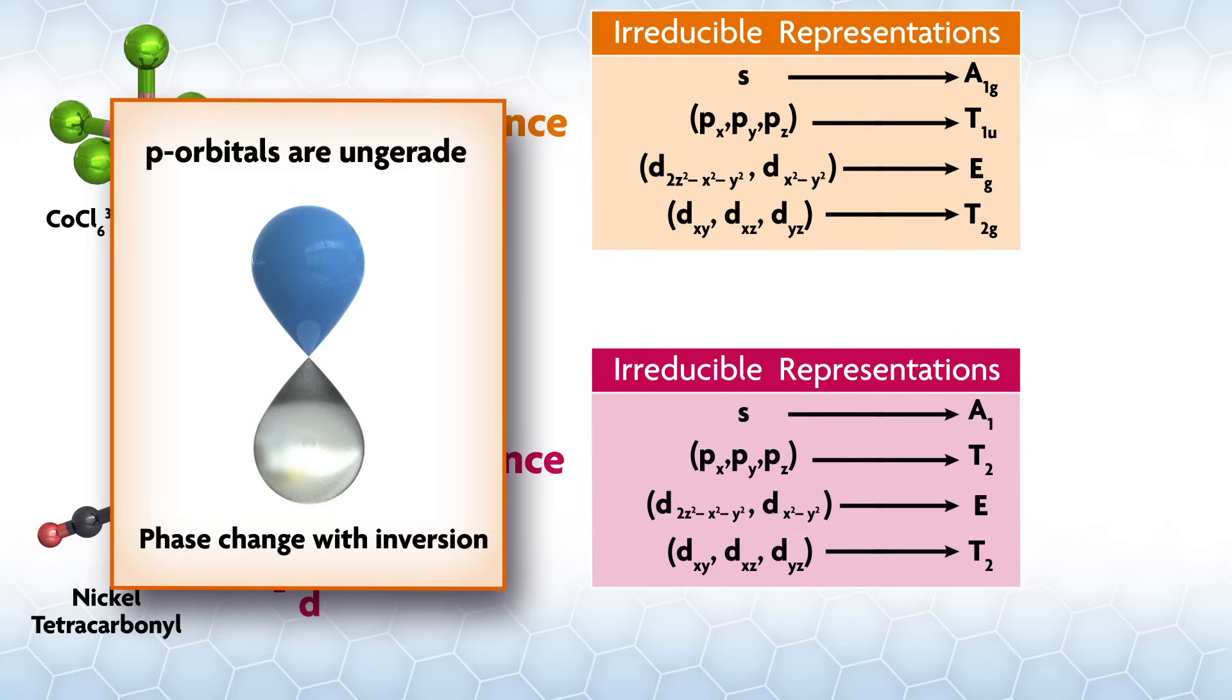On the other hand, p orbitals are ungerade. Their phase changes on inversion. So we add a u to the label going from Td to Oh.